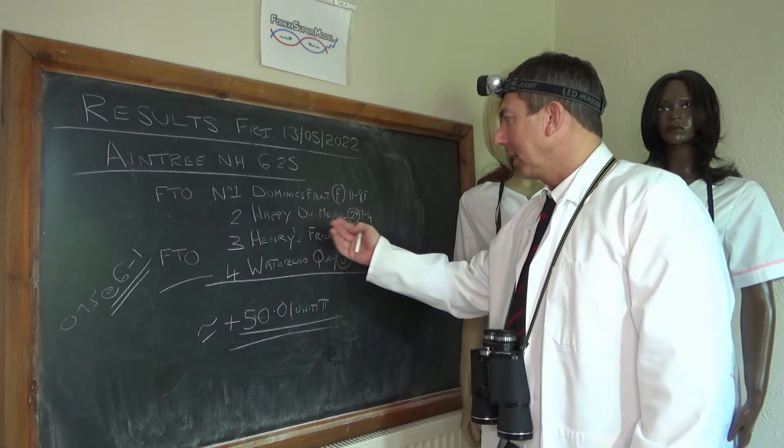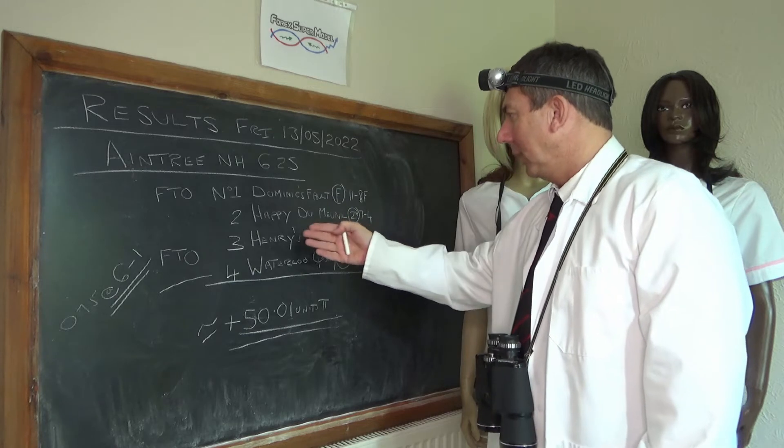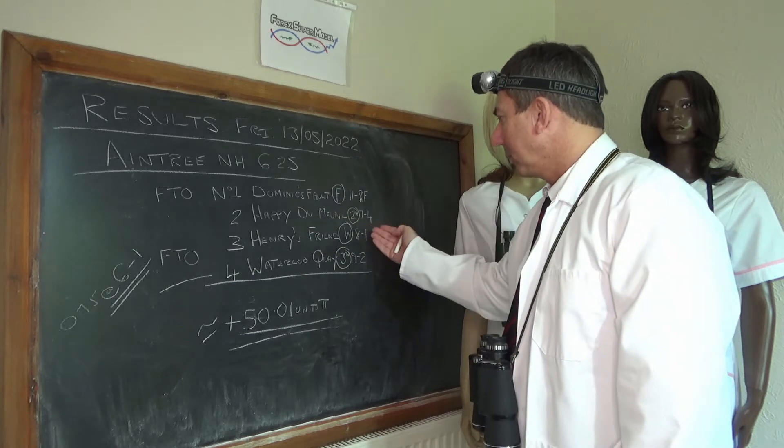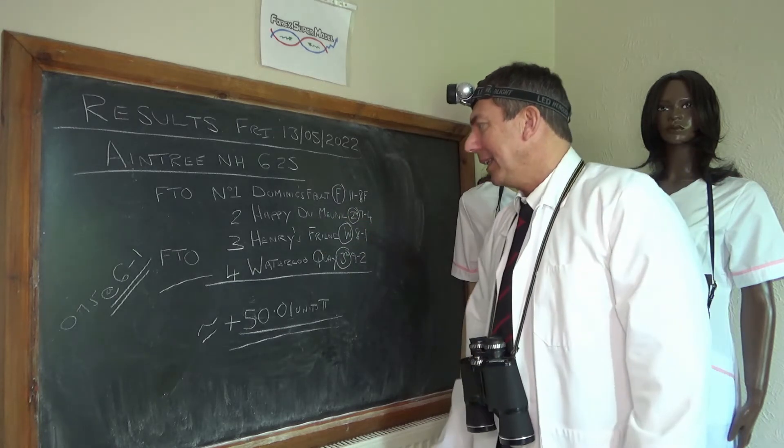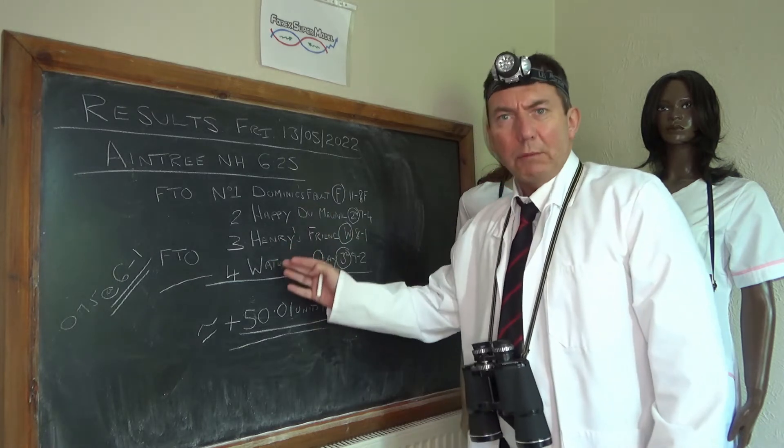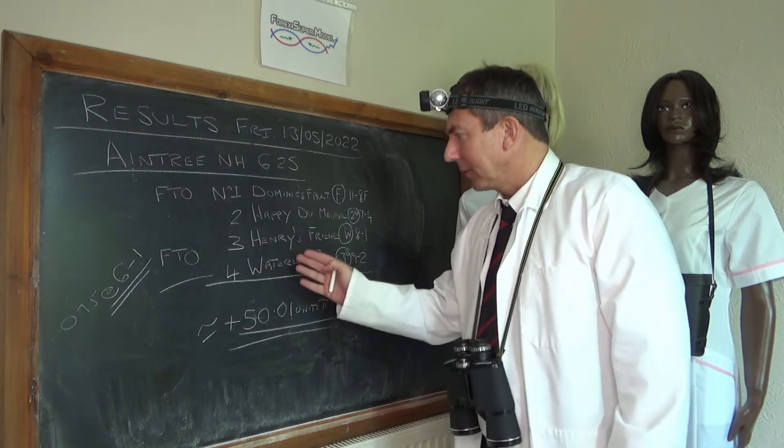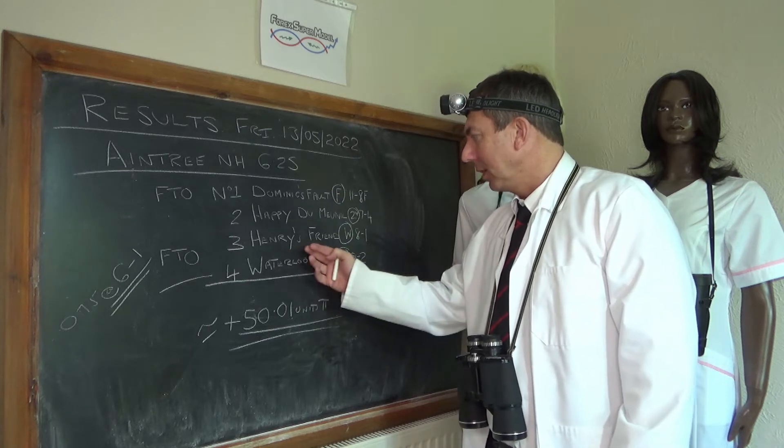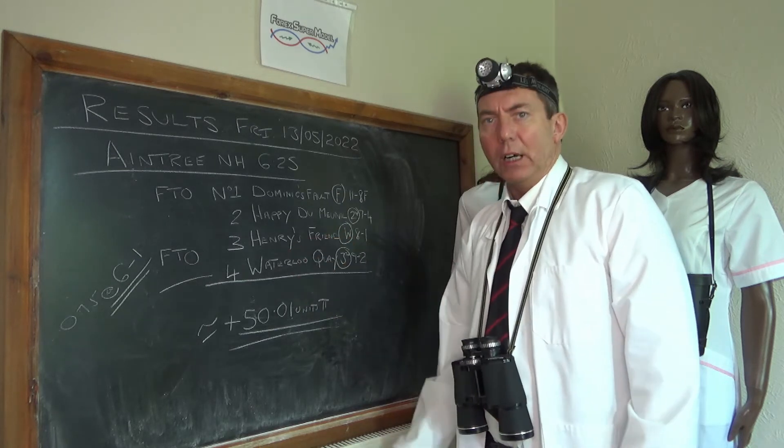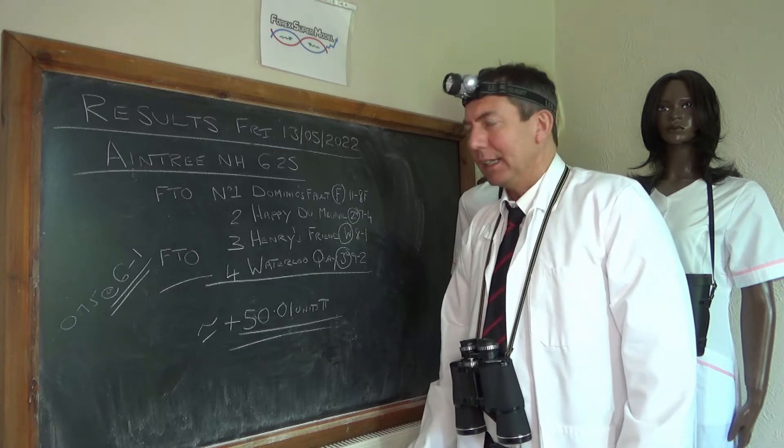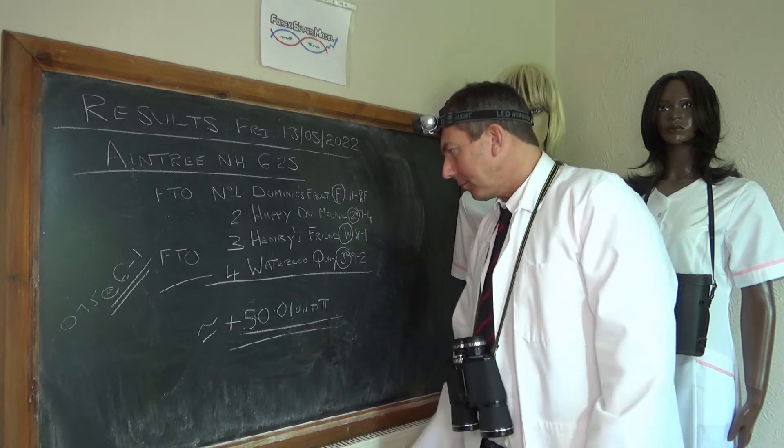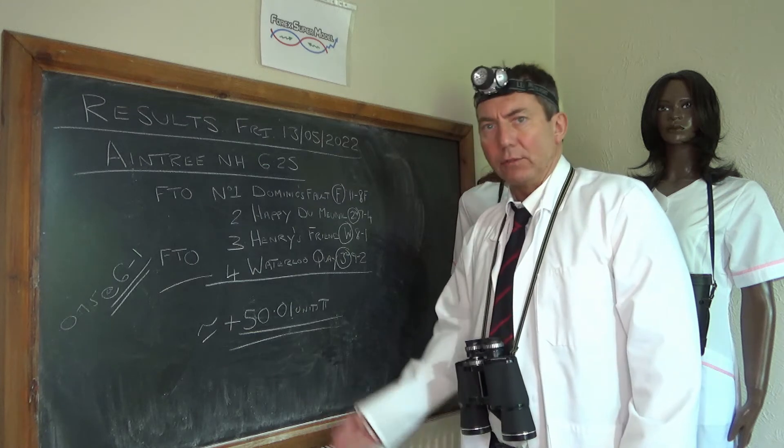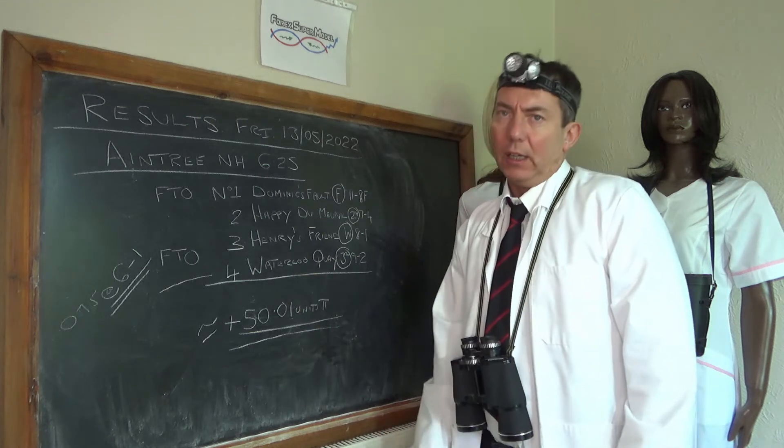We didn't like the second favorite number two Happy Dominion, second center four. When we were reviewing that race ourselves yesterday we were tempted to have a go at this Henry's Friend FTO, and it was about eights and then it drifted out to about fourteens.